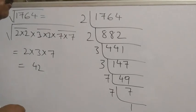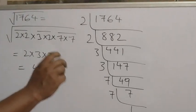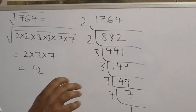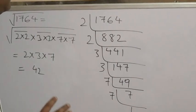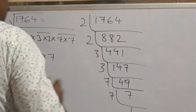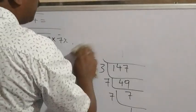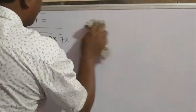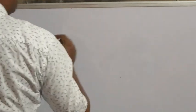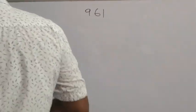Now I will do the long division method. I will do different types: 3-digit, 4-digit, 5-digit numbers, because it is very important and also a little difficult. So understand it properly. The first number I am taking to find by long division method is 961.